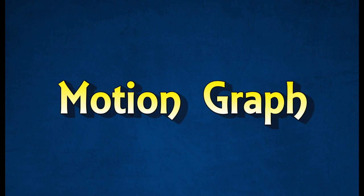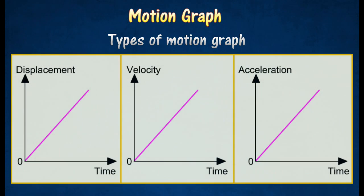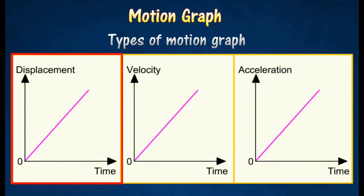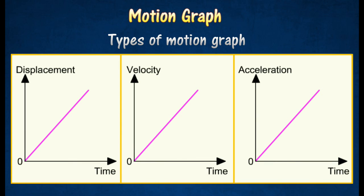Motion graph is a graph that shows the changes in the motion of an object with time. There are three types of motion graph: displacement versus time graph, velocity versus time graph, and acceleration versus time graph.